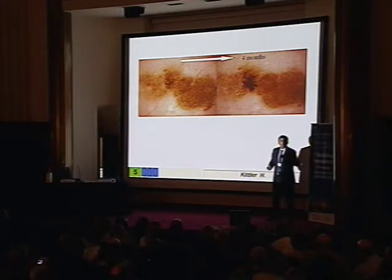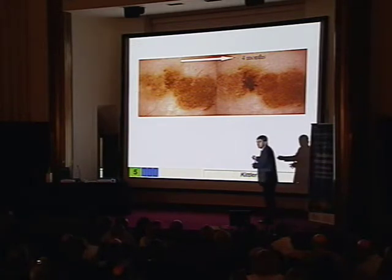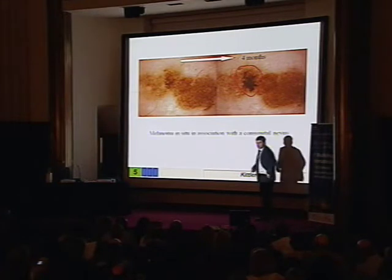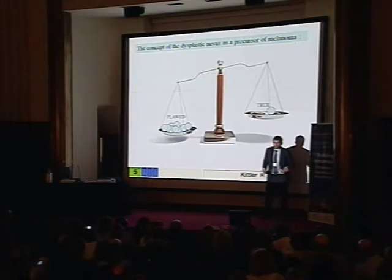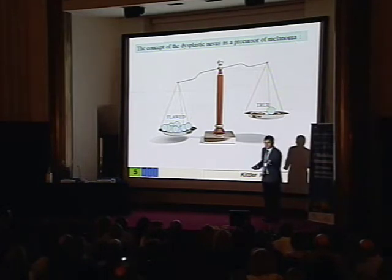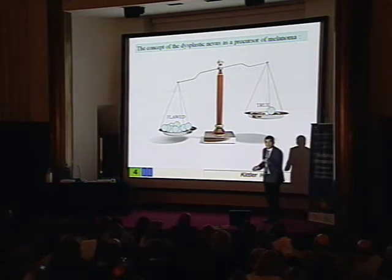And the morphology of the nevus doesn't tell you which nevus has a higher chance to become a melanoma. So let's summarize what I've told you. The concept of dysplastic nevus as a precursor of melanoma is flawed. There is evidence for this, and it's not true.